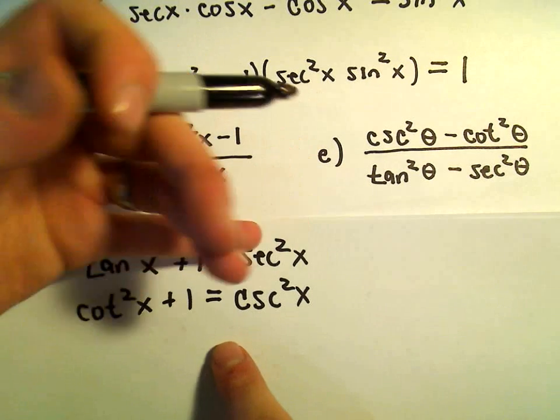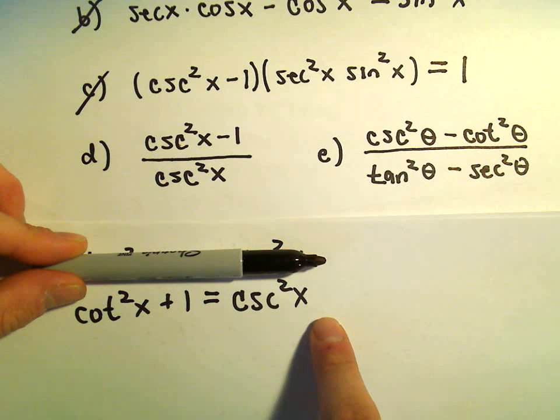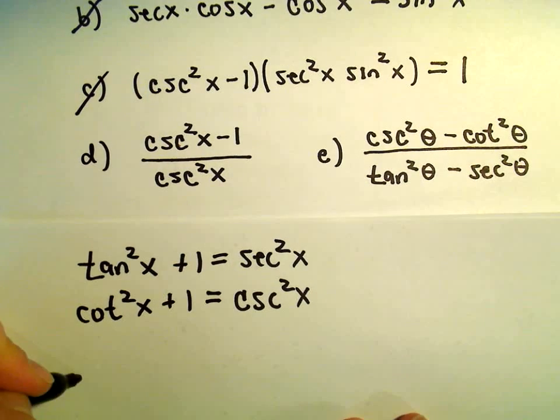So notice if you subtract 1 from this second identity, we'll get cosecant squared x minus 1 equals cotangent squared. So that's what I'm going to write in the numerator.